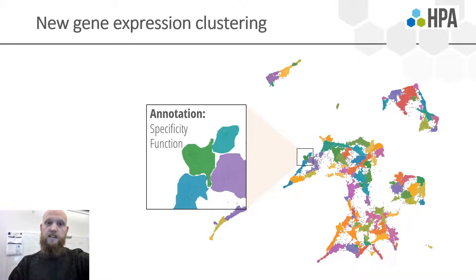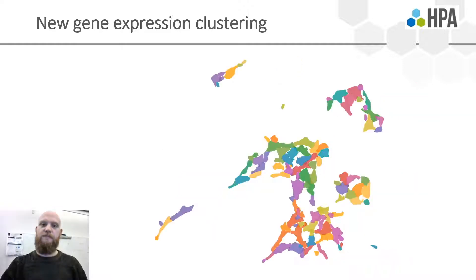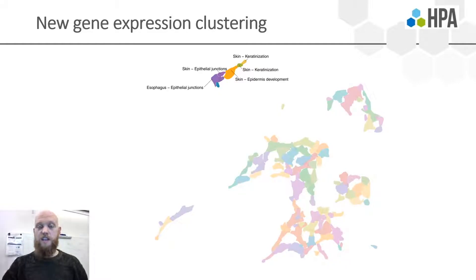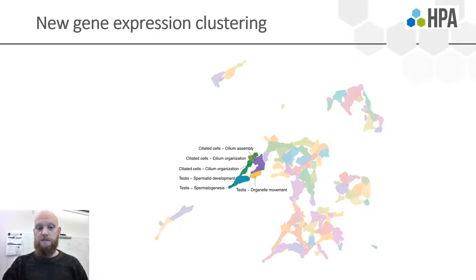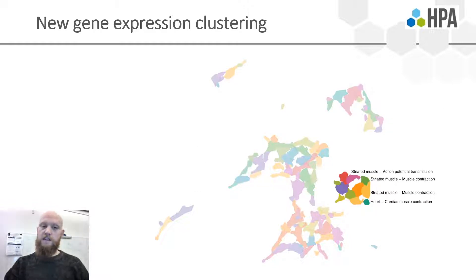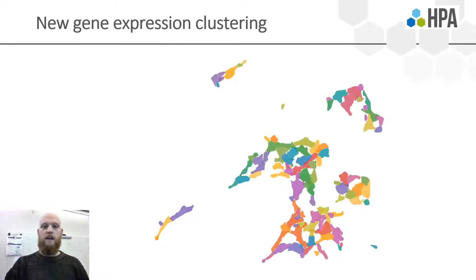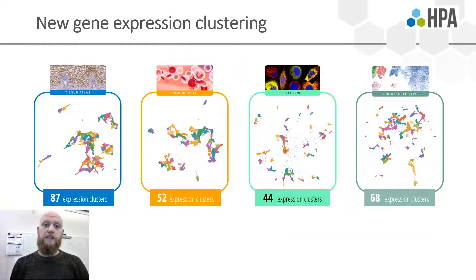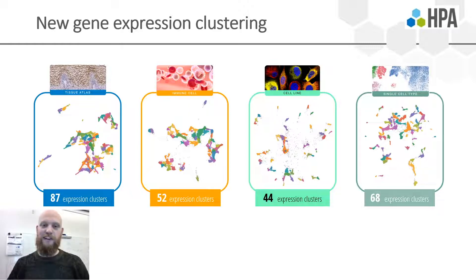Each cluster has been manually annotated by experts in terms of specificity and function. Examples of gene cluster annotations include clusters related to skin and keratinization, immune cells, ciliated cells, muscle cells, and testes, as well as many other tissue cell types and functions. This clustering analysis was performed on four different data sets: tissues, immune cells, cell lines, and single cell types. Feel free to go to the atlas and explore the clusters for yourself.